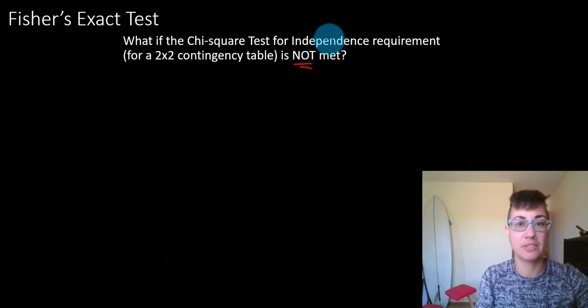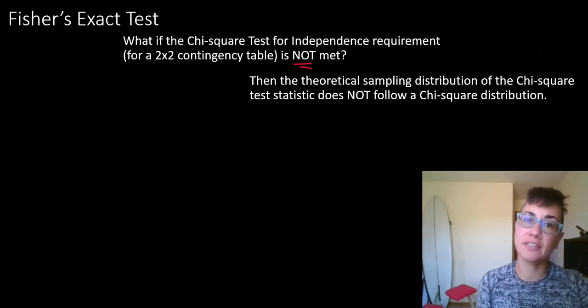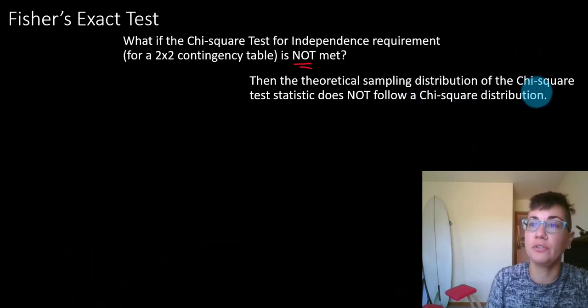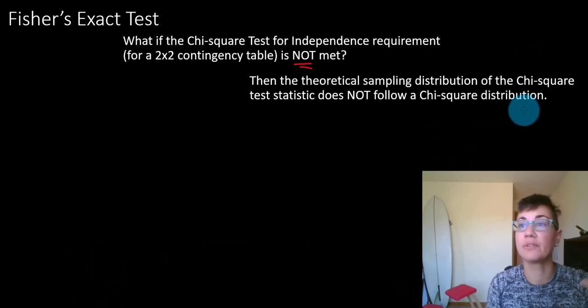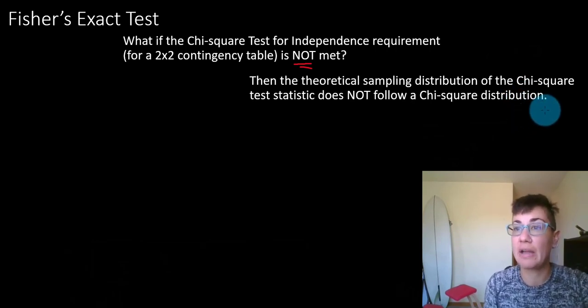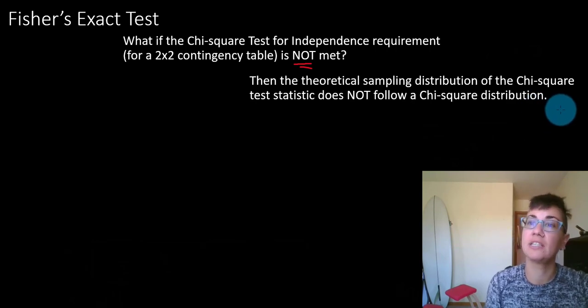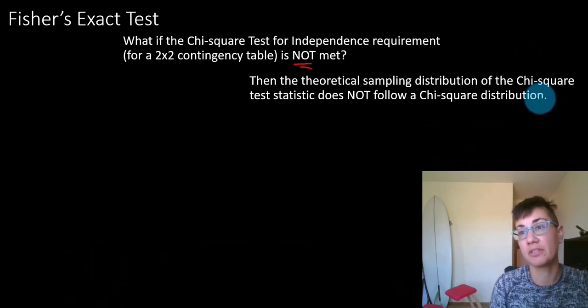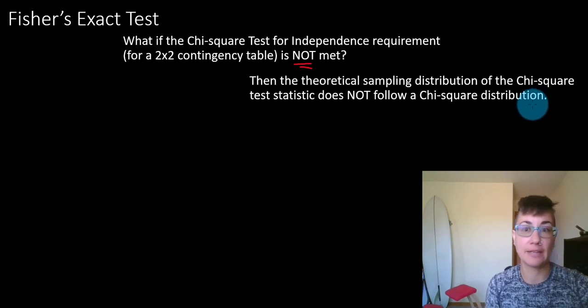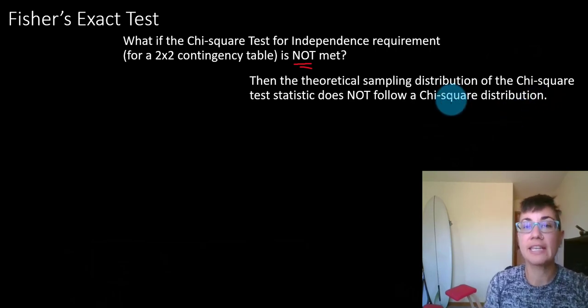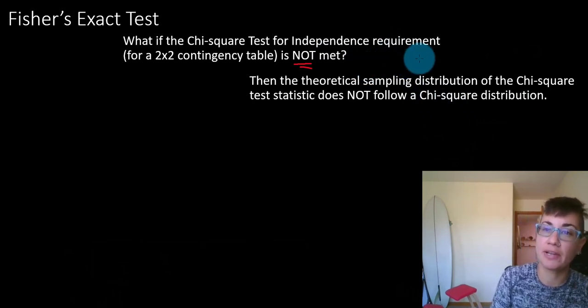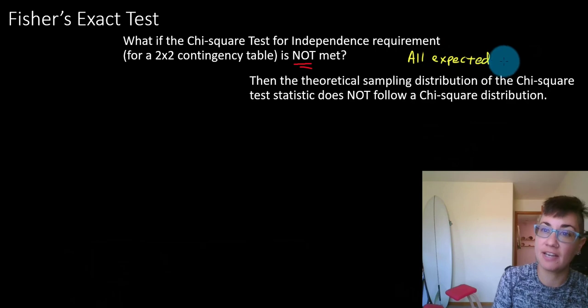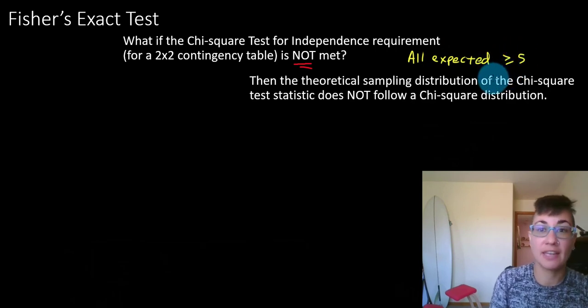These testing requirements allow us to utilize particular distributions such as chi-square, t, or z distribution, such that we can accurately determine probabilities that correspond to the test statistics for that test. If that requirement is not met, here the requirement that all expected values need to exceed five, if that is not met, then we have this other test called Fisher's exact test.